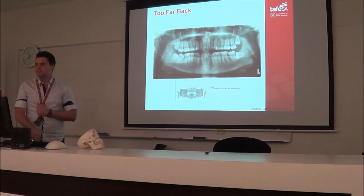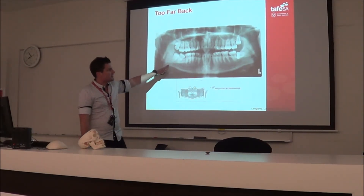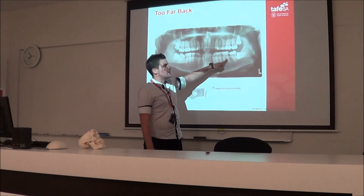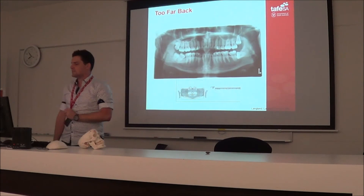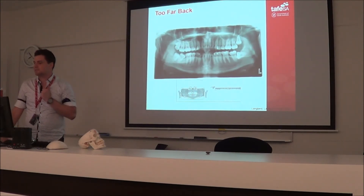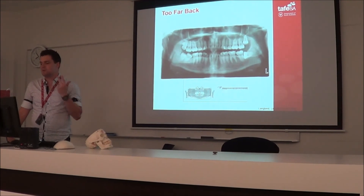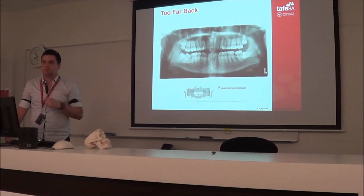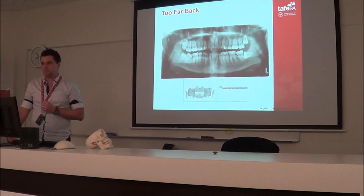The other thing you might notice is — can you see this white line here? You usually start to see secondary rainline. So the three major hallmarks to remember overall are: secondary rainline, TMJs encroaching on the edge of the film, and wider incisors. You'll also sometimes notice a little bit of lightness to the film as well.